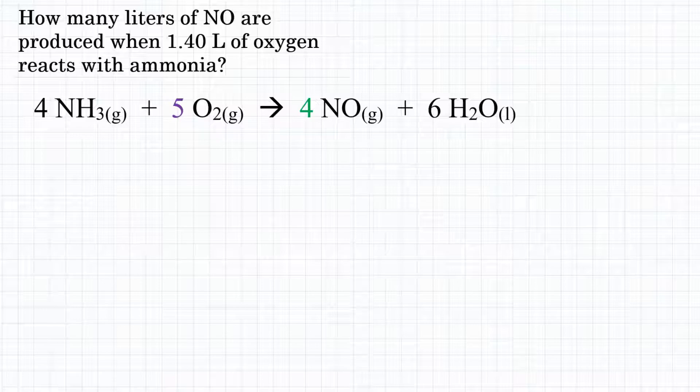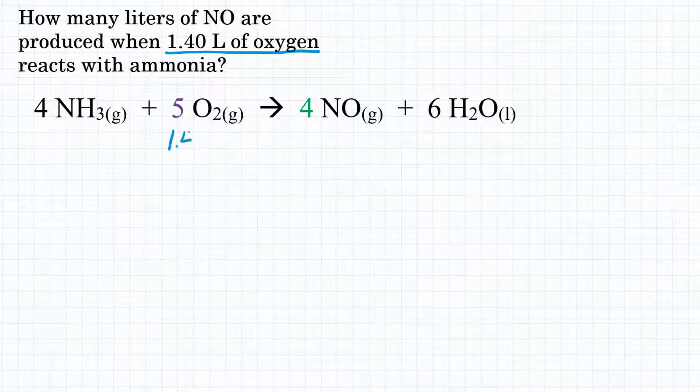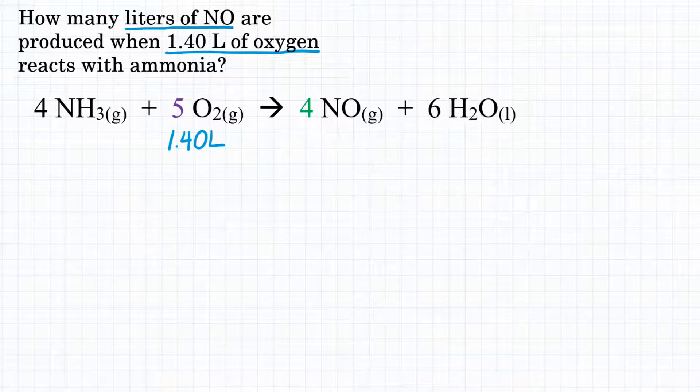The problem gives us 1.40 liters of oxygen, which is O2. Let's write 1.40 liters under O2. It's asking for how many liters of NO are produced.